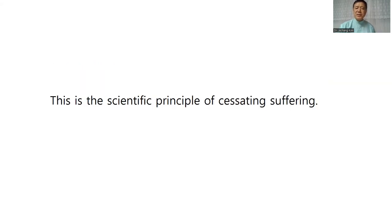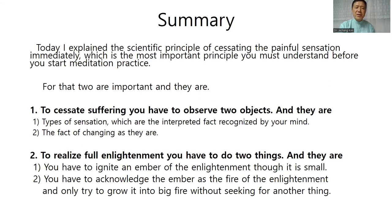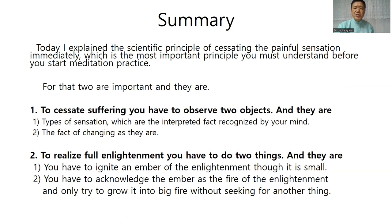This is the scientific principle of cessating suffering. Summary: To cessate suffering, you have to observe two objects — first, types of sensation, which are the interpreted facts recognized by your mind; and second, the fact of changing as they are. To realize full enlightenment, you have to do two things: first, ignite an ember of enlightenment, though it is small; second, acknowledge the ember as the fire of enlightenment and only try to grow it into a big fire without seeking for another thing.